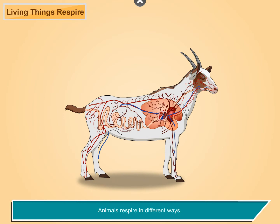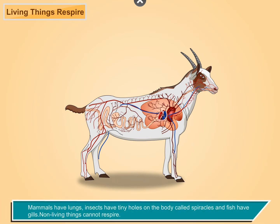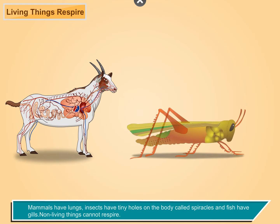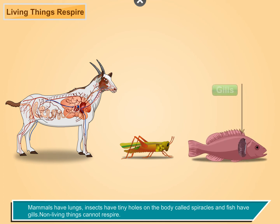Animals respire in different ways. Mammals have lungs, insects have tiny holes on the body called spiracles, and fish have gills. Non-living things cannot respire.